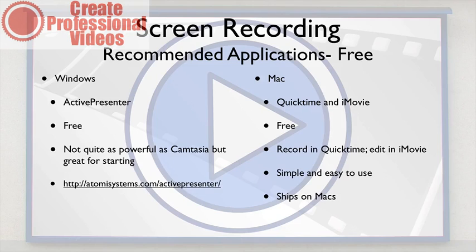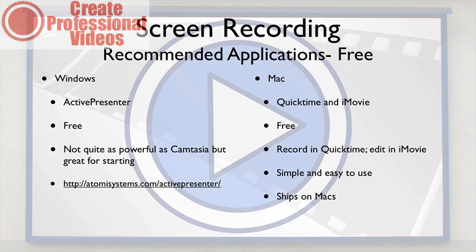QuickTime and iMovie are free if you've made the investment in a Mac — they come shipped on it and are very simple and easy to use. The only disadvantage is you record in QuickTime and then edit in iMovie, so you have to export between them. QuickTime records in very high quality video, which is good, but with screen recording you don't really need 60 frames per second. 60 frames per second is the standard for HD video — it means 60 still images turned into a movie. 30 frames per second is considered SD standard definition.